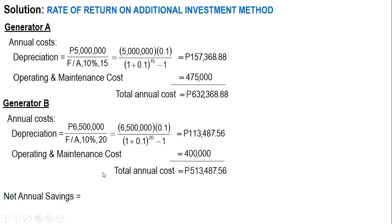From the two annual cost values, we now compute the net annual savings. Since Generator B has a bigger initial investment, it is assumed that its annual cost is smaller compared to the cheaper Generator A. So if we choose Generator B with its higher initial investment, our annual cost is only 513,487.56 pesos instead of 632,368.88 pesos, giving us savings.